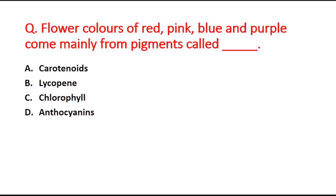Next question: flower colors of red, pink, blue, and purple come mainly from pigments called blank. Option A is carotenoid, option B is lycopene, option C is chlorophyll, and option D is anthocyanins. The right answer is option D, anthocyanins.